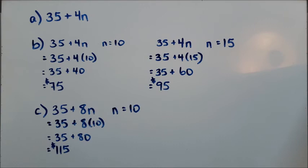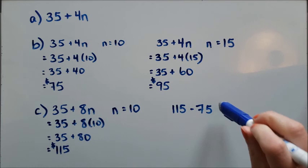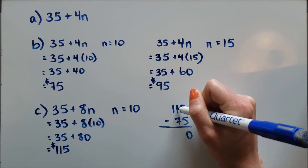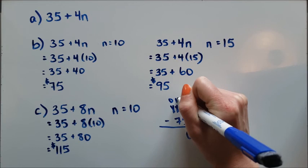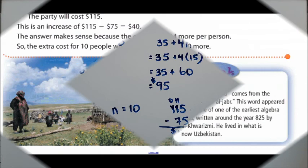This question does ask for how much more would it cost. I can take my original value and subtract it from my current value. I'm actually going to write it vertically, it's easier to subtract that way. 5 minus 5 is 0. I have 1 minus 7, I can't do that, so I'll have to borrow here. 11 minus 7 will give me 4. It'll cost $40 more for 10 people to show up if the cost of the food doubles.